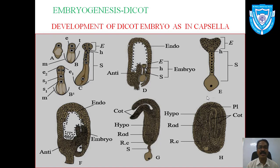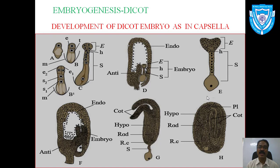The embryonal initial undergoes three mitotic divisions and forms the octant stage — four cells toward the lower side and four toward the upper side. The lower tier produces the hypocotyl and radicle, while the upper tier produces the cotyledon and plumule. Further development takes place in the embryonal cell, and it develops up to the octant stage, then further into a heart-shaped structure.